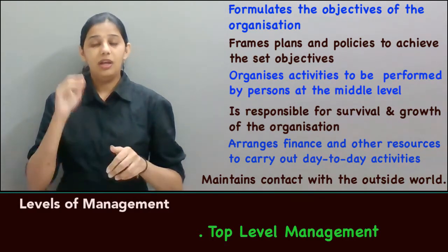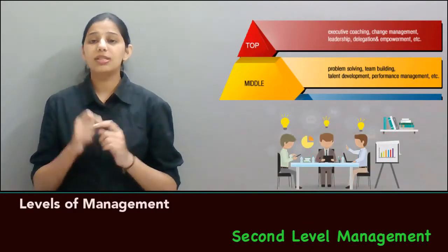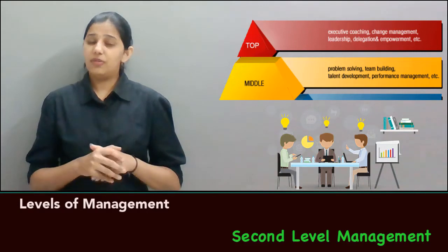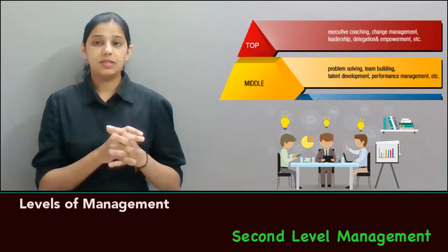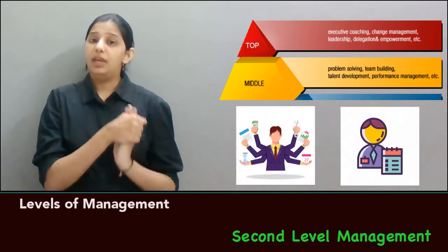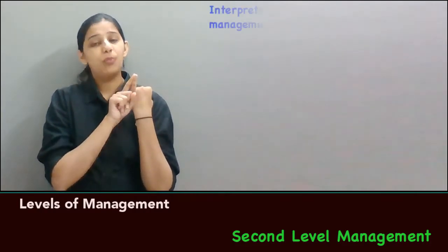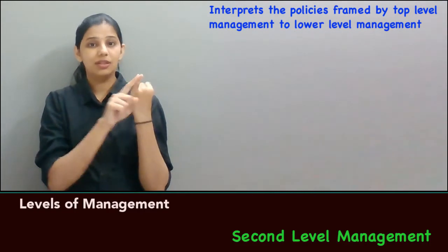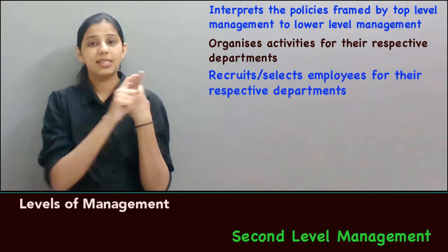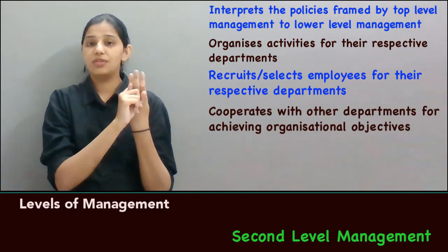Now let's proceed to the second level: Middle Level Management. The middle level acts as a channel or network between the top level and the lower level management. It performs the functions of the top level for their respective departments. Examples include Purchase Department, HR Manager, Marketing Manager, and Finance Manager. Its functions include: interpreting the policies framed by top level management to the lower level, organizing activities for their respective departments, and recruiting or selecting employees for their departments.